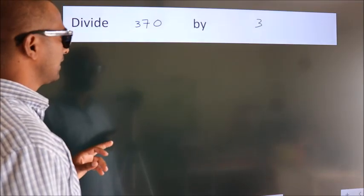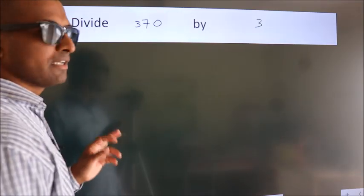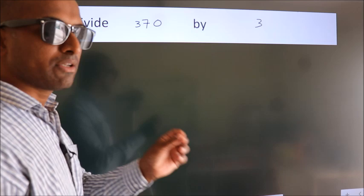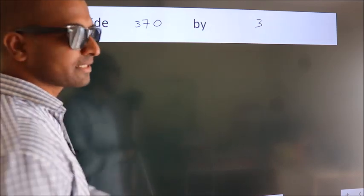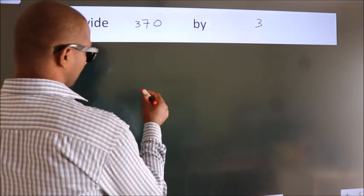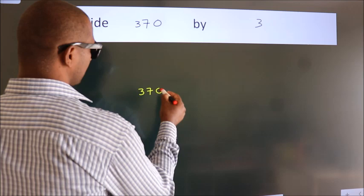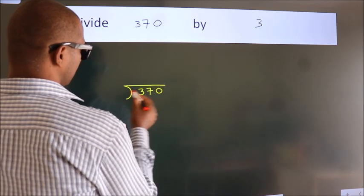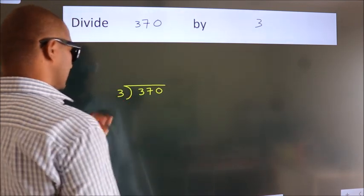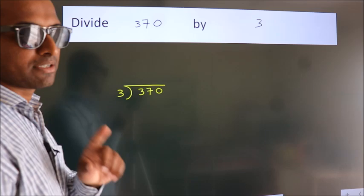Divide 370 by 3. To do this division, we should frame it in this way. 370 here, 3 here. This is your step 1.